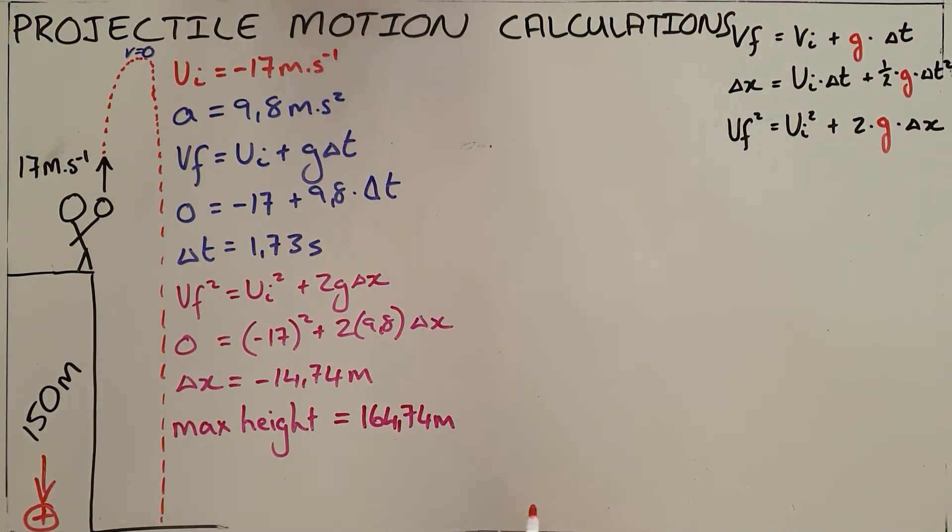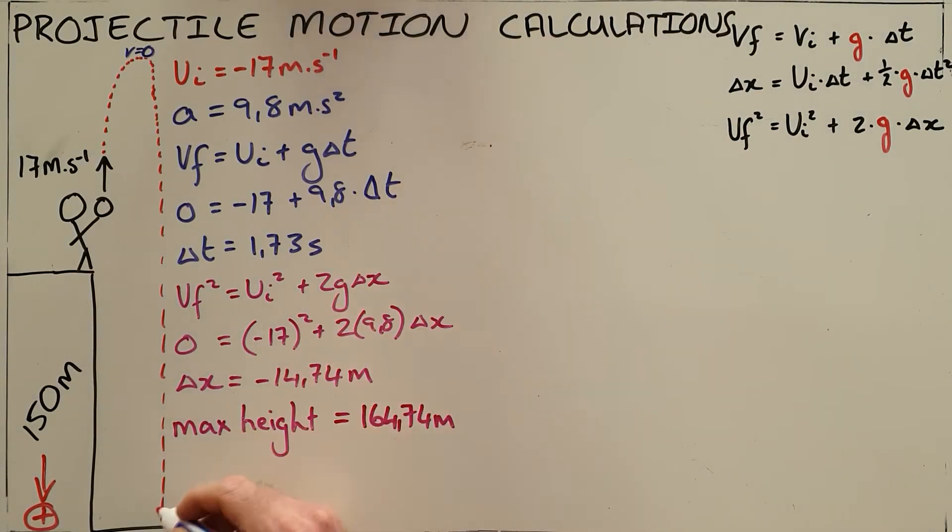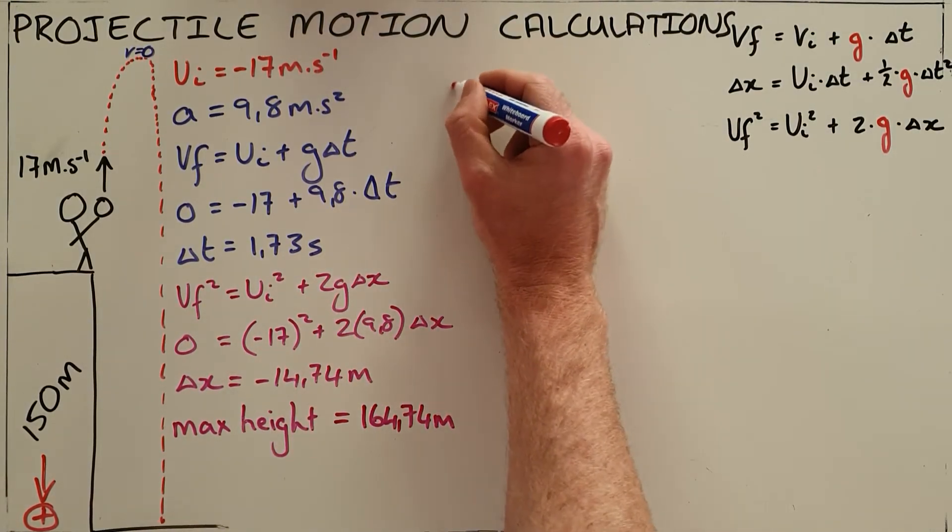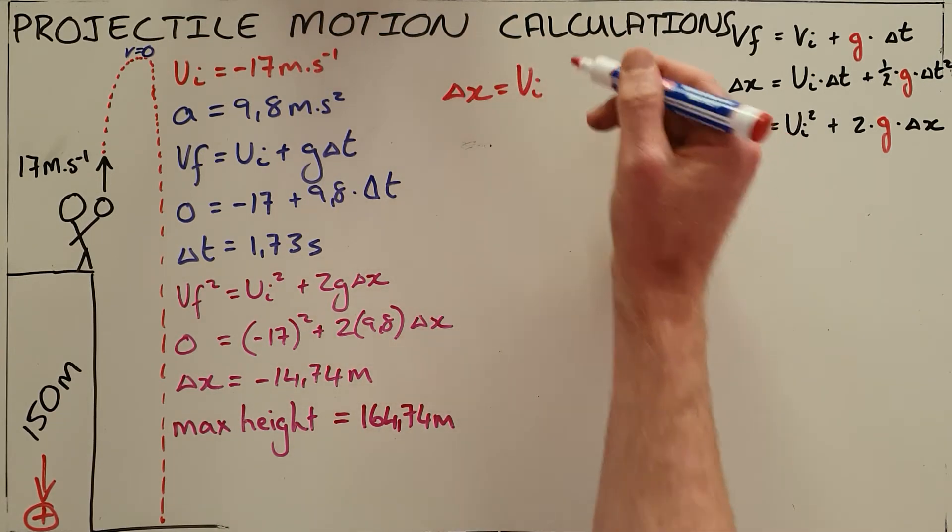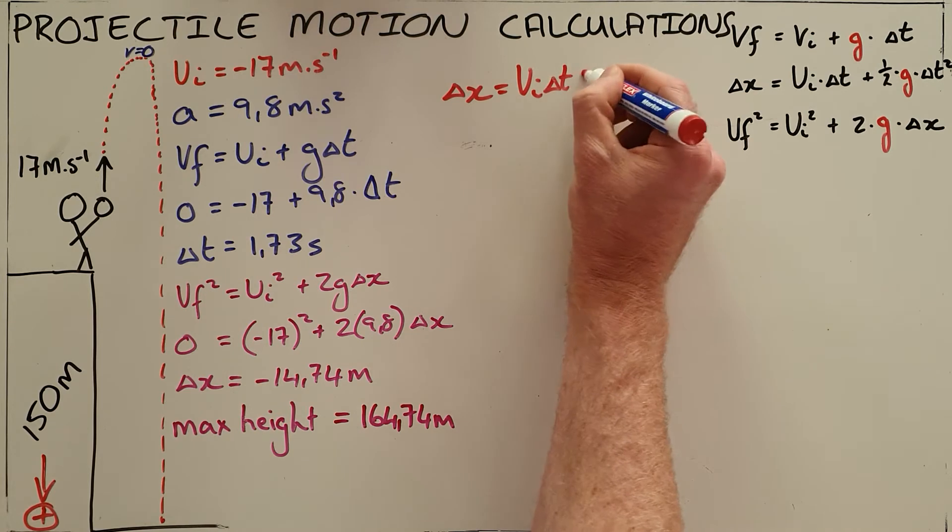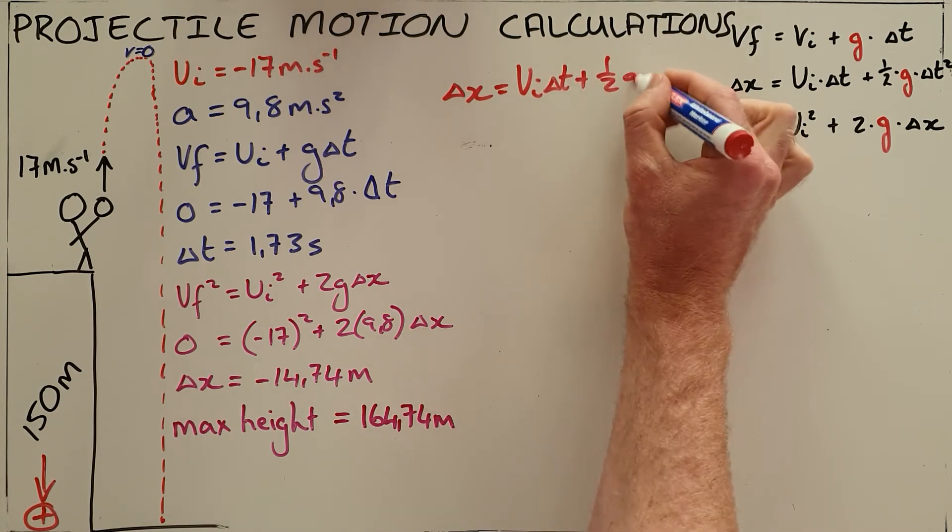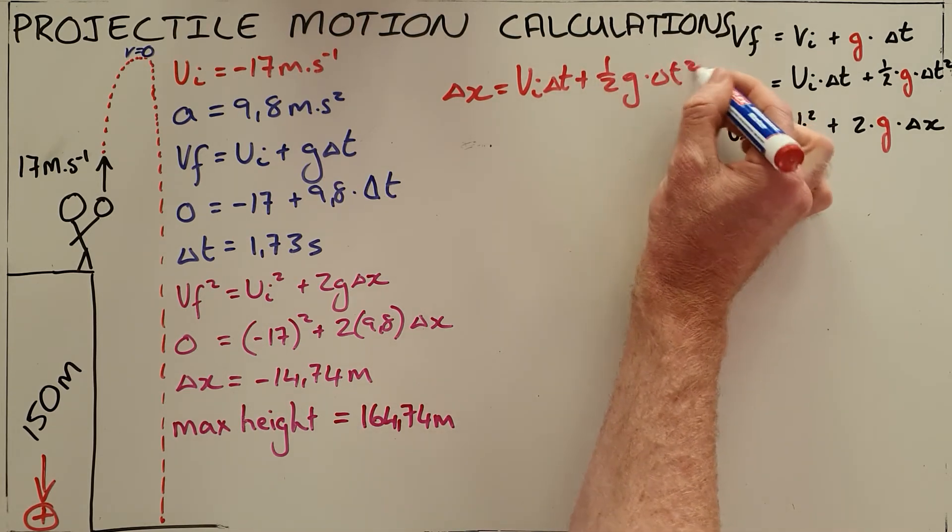The next question that is commonly asked is calculate the amount of time it takes to reach the ground. We can do that by knowing that the displacement is only going to be 150 meters, despite the object traveling upward first.